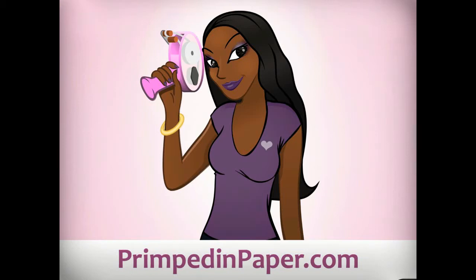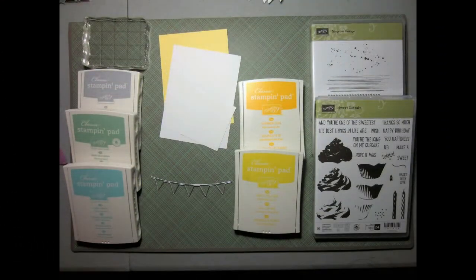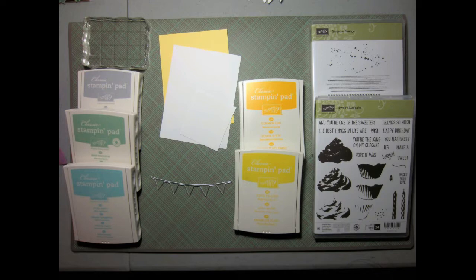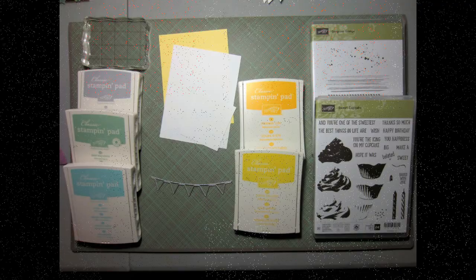Hey everybody, today we're going to be making a birthday card and we're going to be using the Stampin' Up! set called Sweet Cupcake. I also have some Stampin' Up! ink, some cardstock, and a little banner die. I'm also going to use the Gorgeous Grunge stamp set, but that's completely optional. So let's get our supplies and let's start!